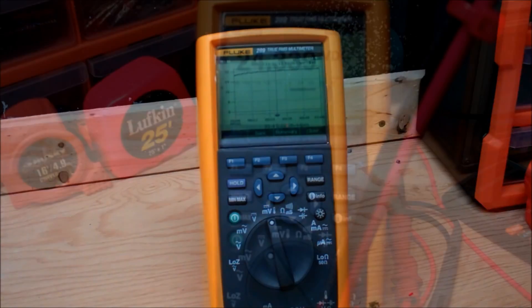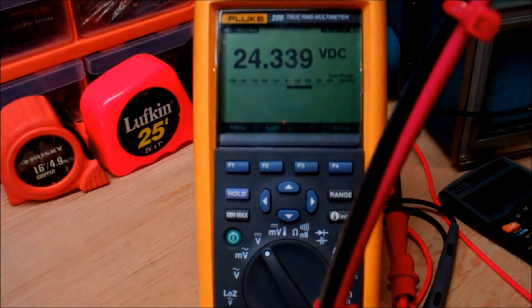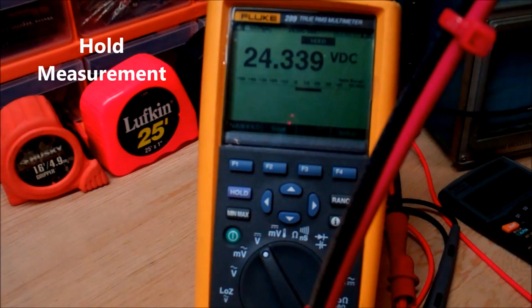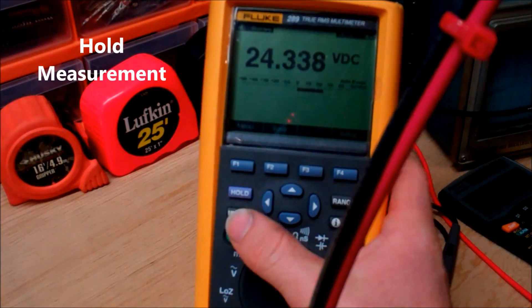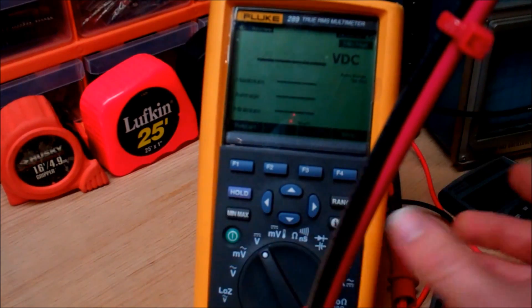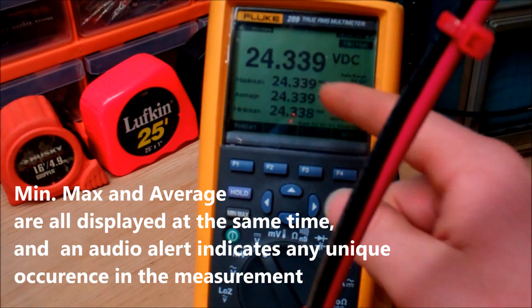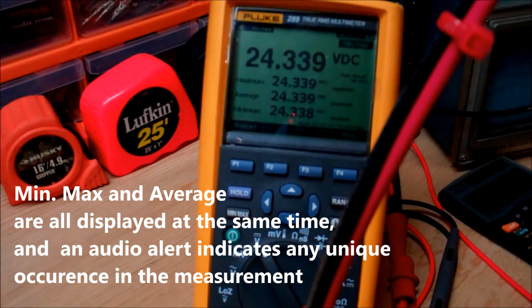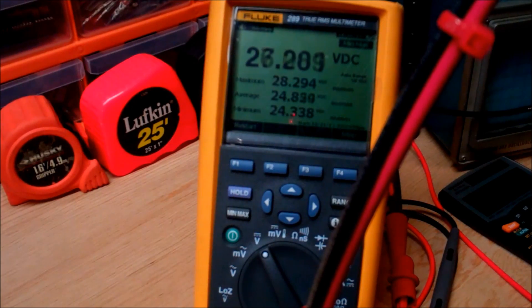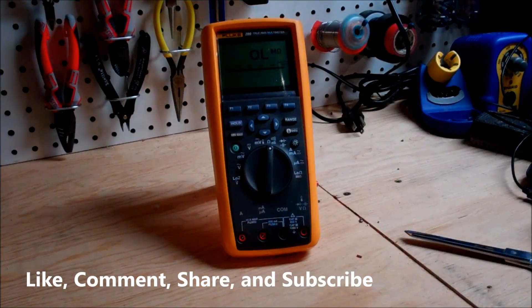The next features it has is hold, so you can hold the measurement that you currently have if you just want to quickly jot that down or measure something like that. And then of course your traditional min/max. It's really nice because it tells you the maximum, the average, and the minimum all at the same time while telling you the current. As you can see as we jog it down it beeps when there's anything massive going on in the circuit such as a new high or a new max.